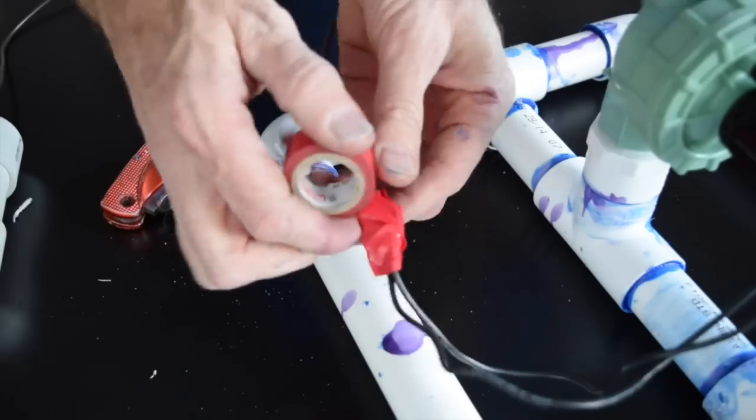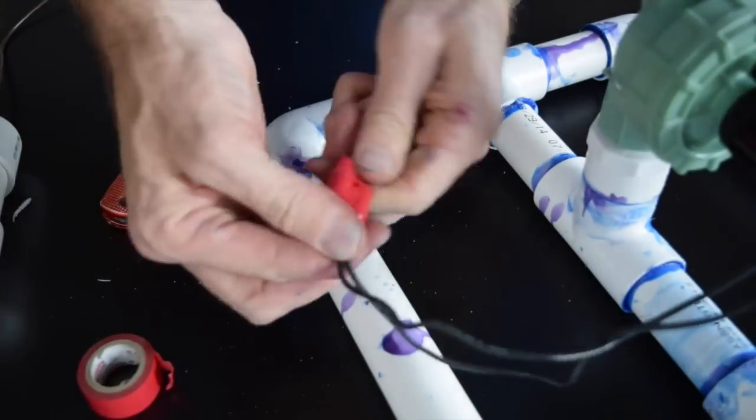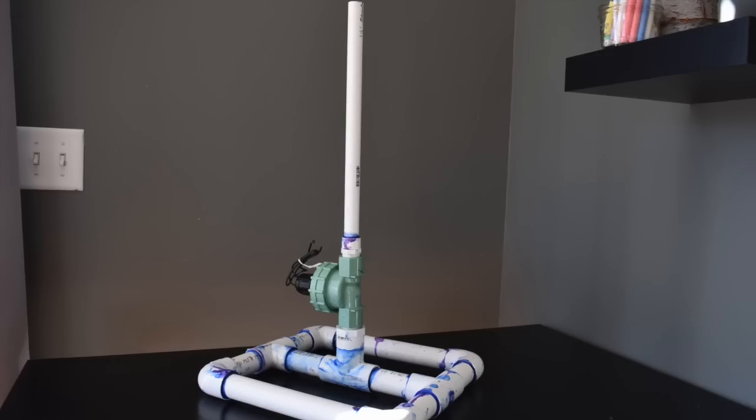Once the wires are attached and the battery is installed on the switch you can test it by pressing the switch. You should hear a clicking sound from the sprinkler valve.